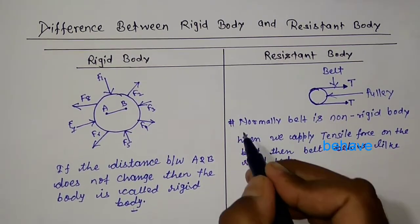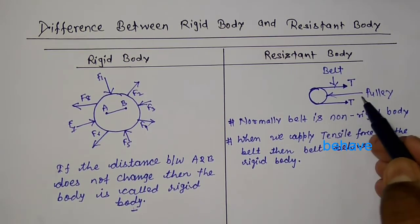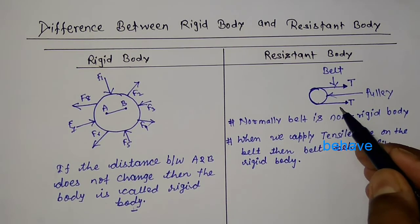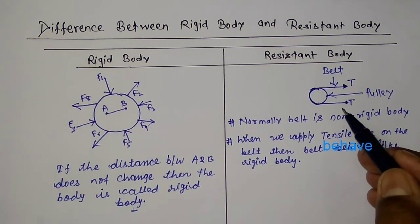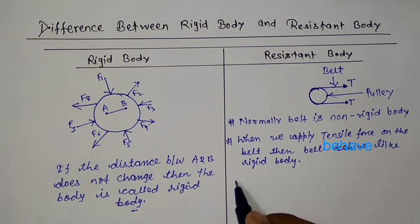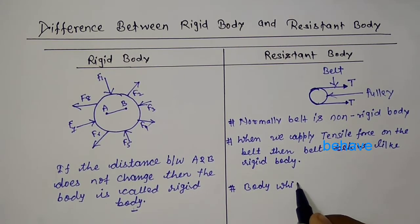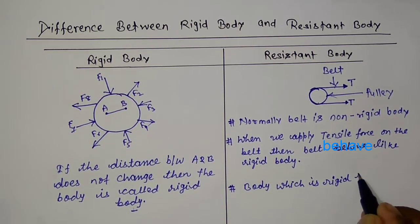So this belt is called a resistant body. It means when a body is non-rigid and becomes rigid to serve a particular purpose, it is called a resistant body. Initially the body is non-rigid, and it becomes rigid to serve a particular purpose. The definition of resistant body can be written as: a body which is rigid for a purpose they have to serve, but naturally they are non-rigid.